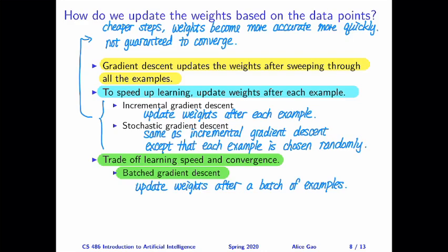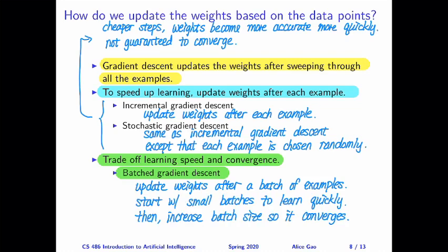So by changing the batch size, we could sort of move between these two extremes. And often people will use batch gradient descent as follows. They will start with small batches so that we will learn very quickly. And then at some point, we'll start increasing the batch size because once you increase the batch size, it's going to be closer to the entire training set so that eventually the weights will converge. So the batch size gives us a really nice way of trading out the speed of learning versus convergence.